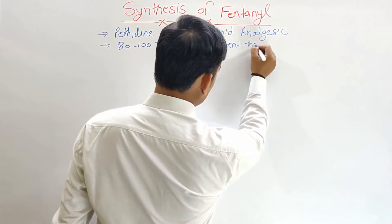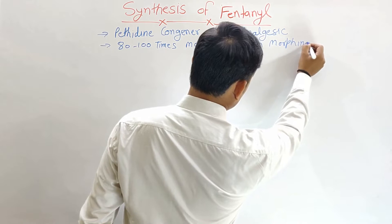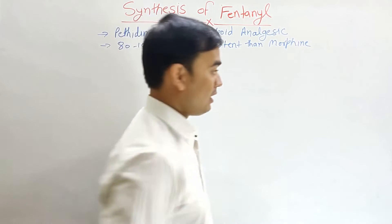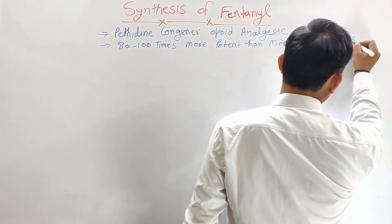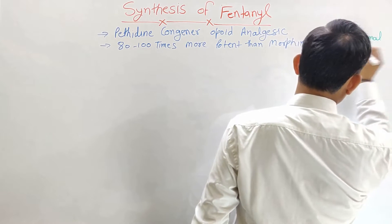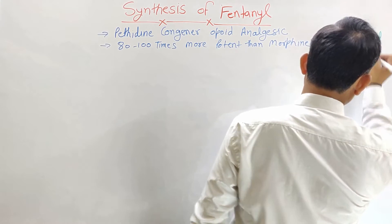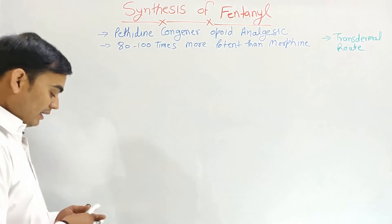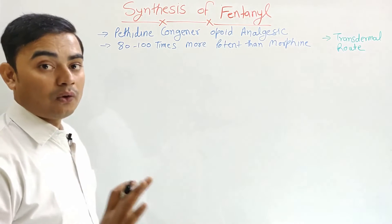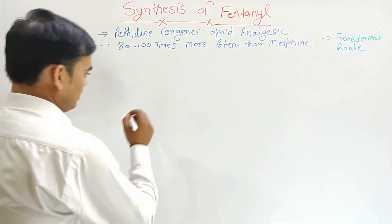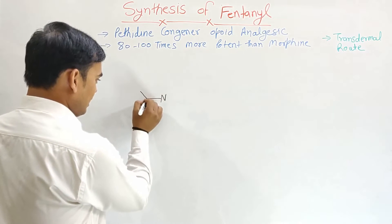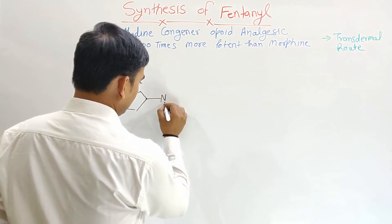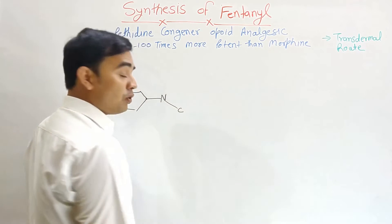Fentanyl is mainly used via transdermal delivery, so it is given by the transdermal route. Now let's discuss the structure of fentanyl. The fentanyl structure mainly has four different groups attached. This nitrogen here has a phenyl group, and with this there is a propionyl group attached.